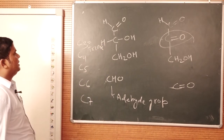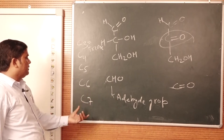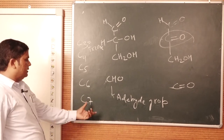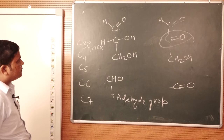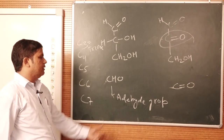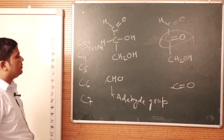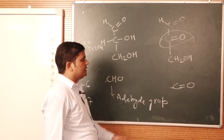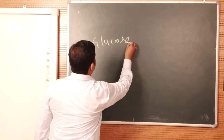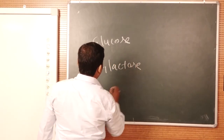When it has 4 carbons, it is called tetrose. When it has 5 carbons, it is called pentose. When it has 6 carbons, it is called hexose, and with 7 carbons it is called heptose. When the functional group present is CHO (aldehyde group), the corresponding names apply. The examples of aldehyde-group carbohydrates are glucose, galactose, and mannose.